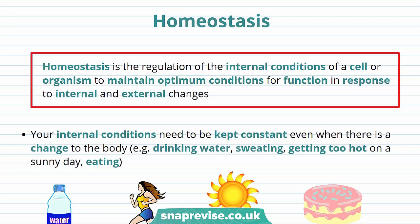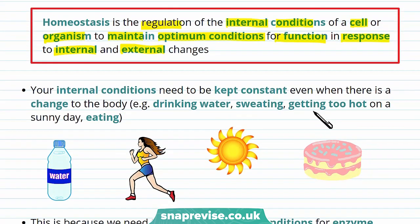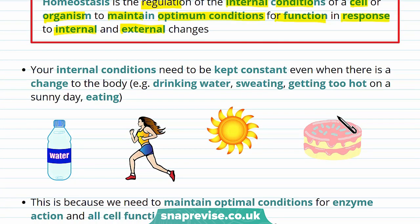The exact definition of homeostasis is that it's a regulation of the internal conditions of a cell or organism to maintain optimum conditions for function in response to internal and external changes. Your internal conditions are the things that need to be kept constant, even when there's a change to the body.